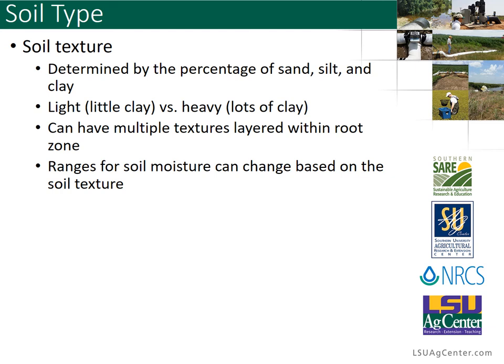You can also have multiple textures layered within a soil vertically below the soil surface. When that happens, there are special considerations when considering irrigation, but we are going to focus on a uniform homogeneous soil texture when we talk about irrigation scheduling today. Your ranges of soil moisture — as a percentage or volumetric water content based on soil texture — will be higher for a clay soil than for a sand. So field capacity, or the maximum amount of water you can hold, could be 13% for a sand or 45% for a clay. It's very soil dependent.